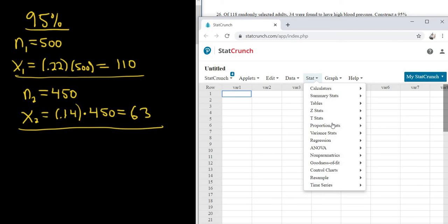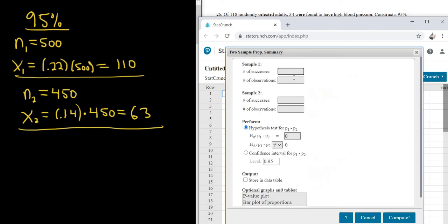We go to Stat, Proportion Stats, and then we go to Two Sample, and then we go to With Summary. So successes here is going to be 110. Observations is 500. Successes here is 63. Observations is 450.